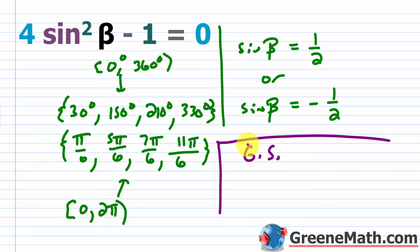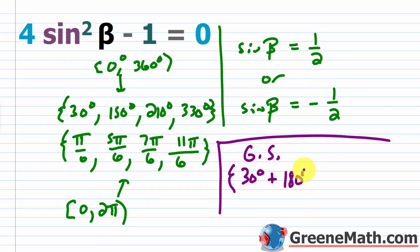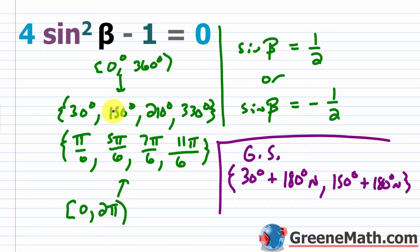For the general solution, when you work with sine the period is 360 degrees. Notice that jumping from 30 degrees to 210 degrees is an increase of 180 degrees. So the general solution starts with 30 degrees plus 180 degrees times some integer n, and then 150 degrees plus 180 degrees times n — because 150 and 330 degrees differ by 180 degrees.